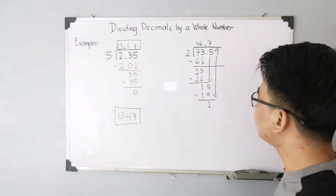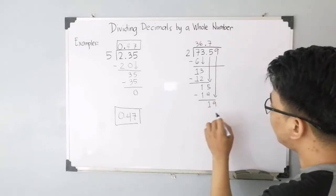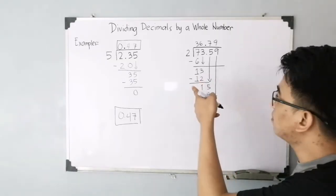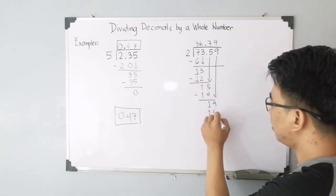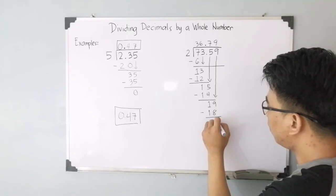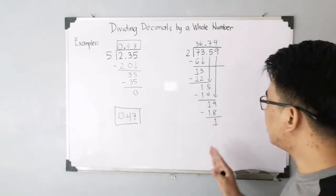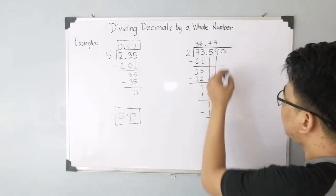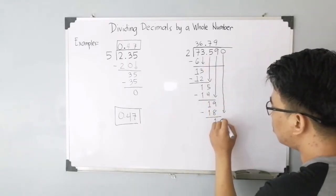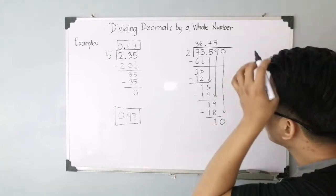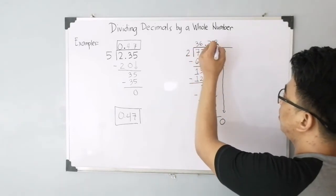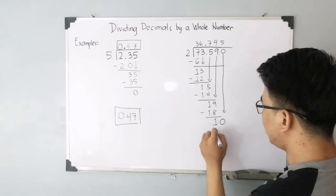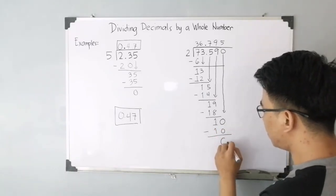Bring down 9 and you have your new dividend: 19 divided by 2, that is 9. And 9 times 2, that is 18. So subtracting these numbers will give you 1. We're not done yet. As you can see, we still have 1 here, so we'll add a 0 here, bring it down, giving us a new dividend which is 10. And 10 divided by 2, that is 5. And finally, 5 times 2, that is 10. Subtract, this is equal to 0.